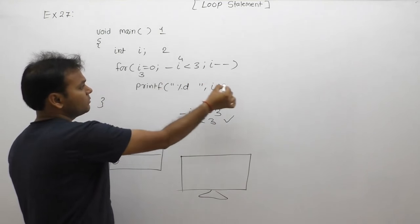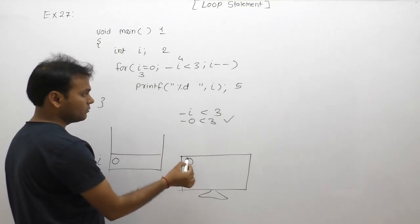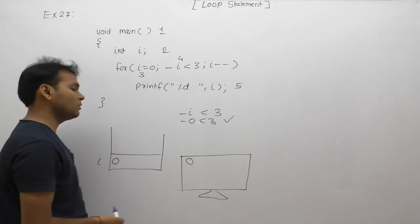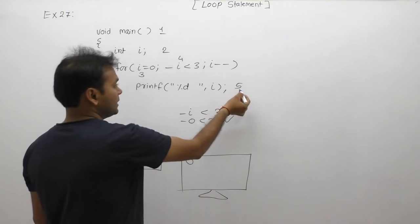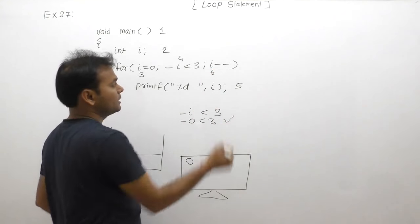Fourth case condition is true, and fifth case then participants will be in the body. According to the body, i's value will be displayed. Here i is 0. Using this, the value of i is 0.